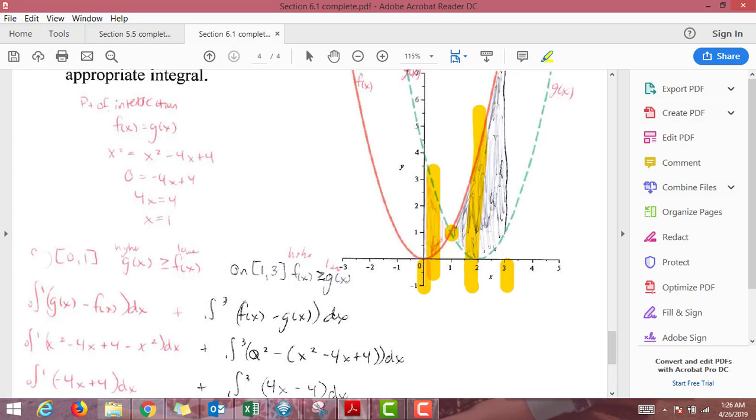So now higher minus lower is flipped. It's x squared is higher minus parentheses, because there's multiple terms, x squared minus 4x plus 4 is lower.